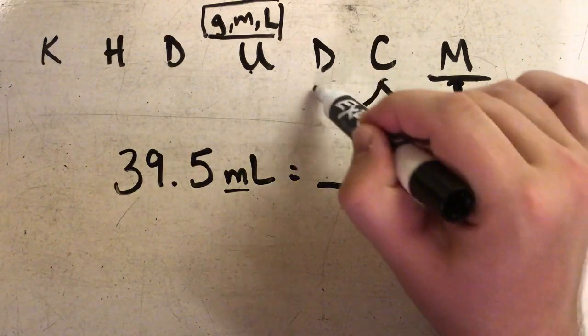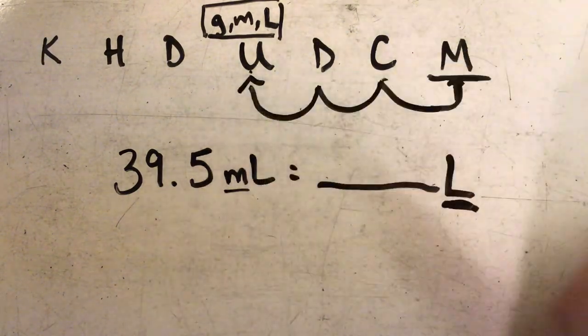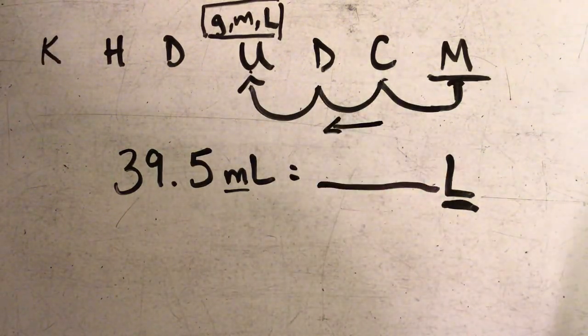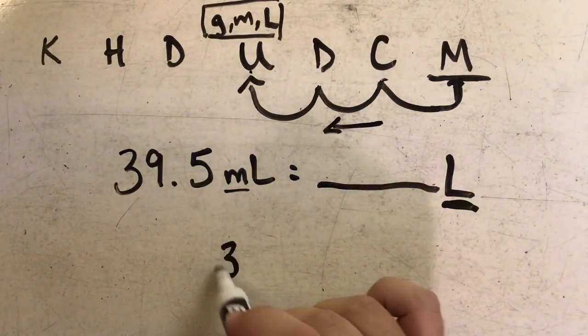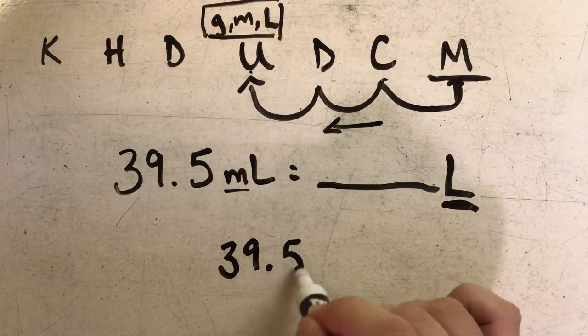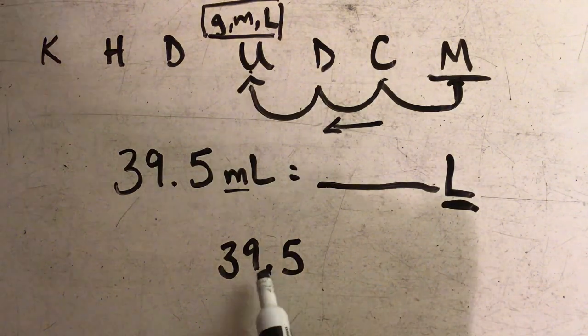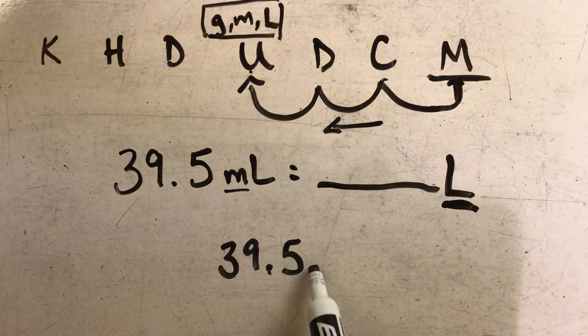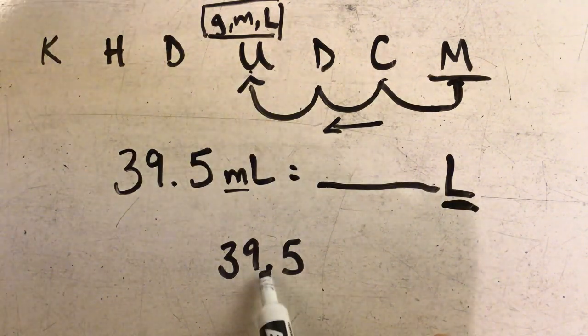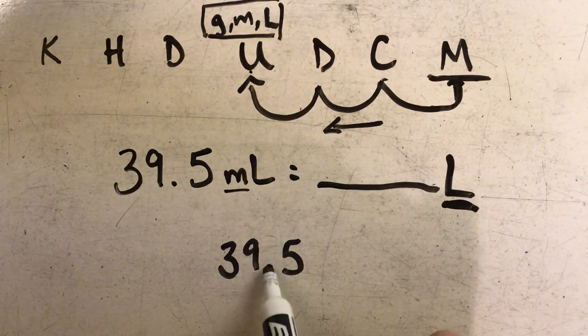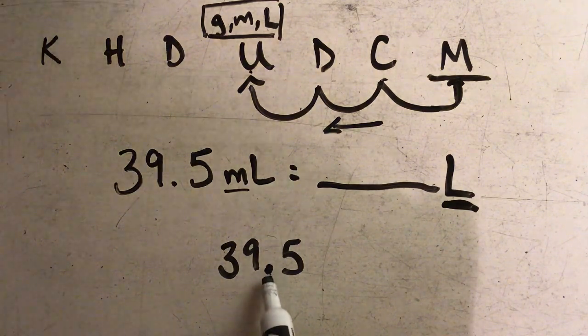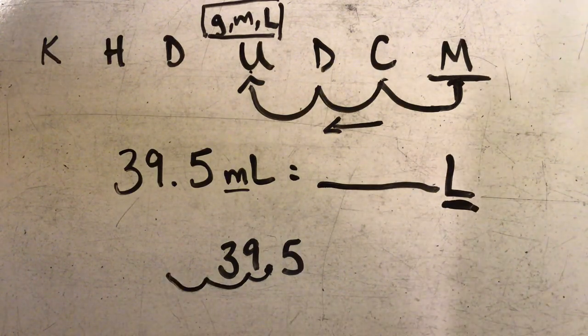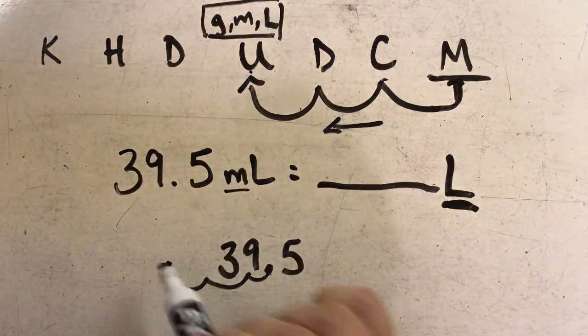I'm going to move my decimal once, twice, three times to get to U, and it's moving to the left. So I take my decimal point and I'm going to start in the middle of the number. I wouldn't start at the end where I have been, because there is a decimal in this problem already. So I need to start wherever my decimal point is. And in this case I'm going to move it one, two, three times to the left.